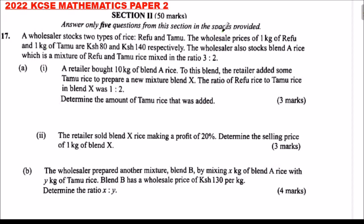Number 17: A wholesale seller stocks two types of rice — Refu and Tamu. The wholesale price of one kg of Refu is Kenya Shillings 80 and one kg of Tamu is Kenya Shillings 140. The wholesaler also stocks Blend A rice, which is a mixture of Refu and Tamu rice mixed in the ratio three to two.